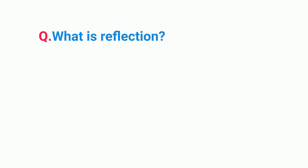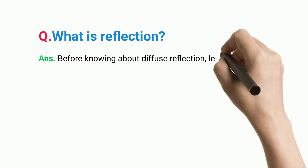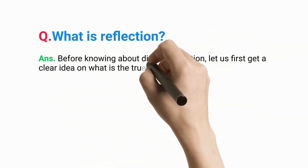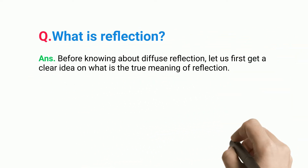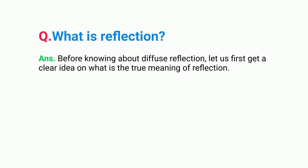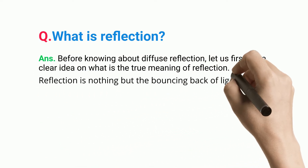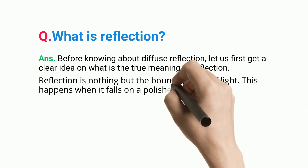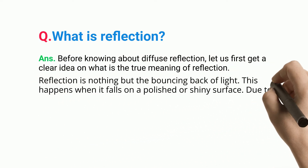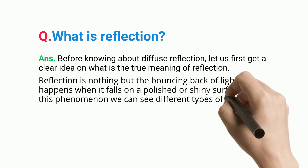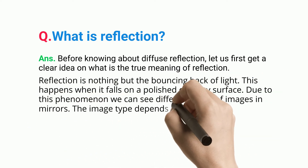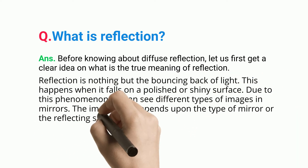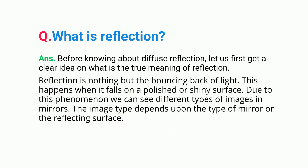What is reflection? Before knowing about diffuse reflection, let us first get a clear idea on what is the true meaning of reflection. Reflection is nothing but the bouncing back of light. This happens when it falls on a polished or shiny surface. Due to this phenomenon, we can see different types of images in mirrors. The image type depends upon the type of mirror or the reflecting surface.